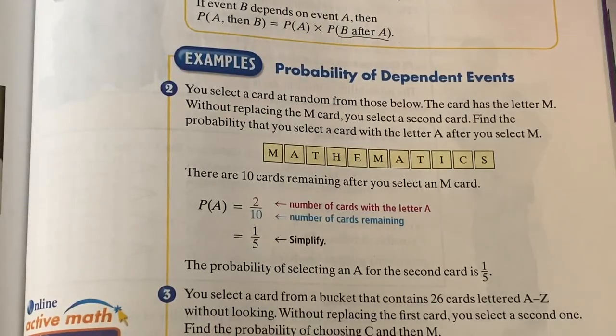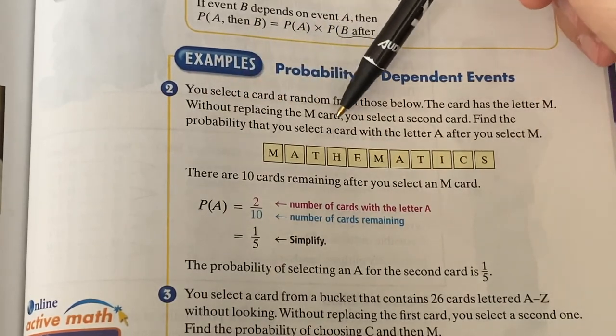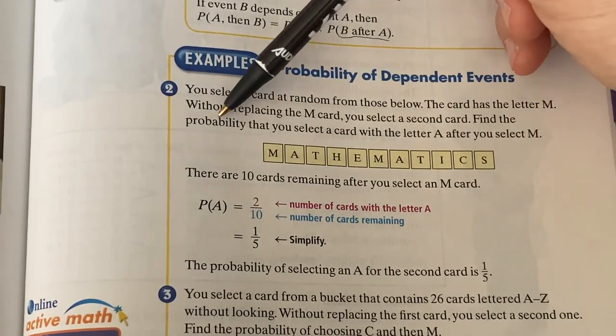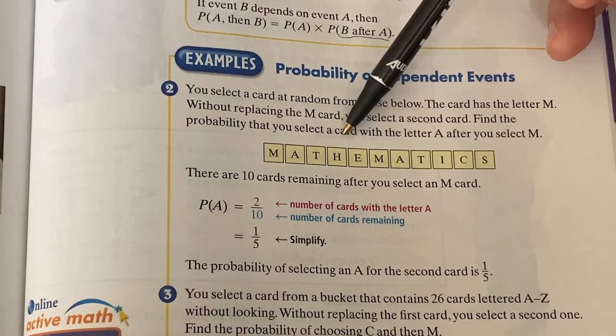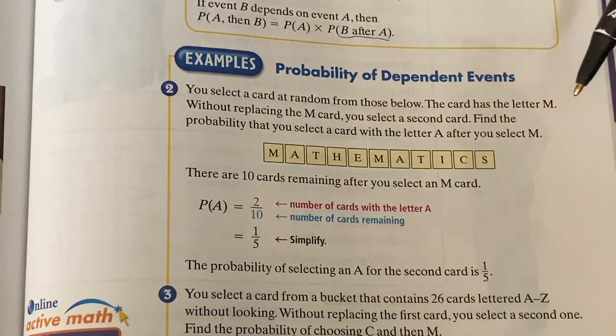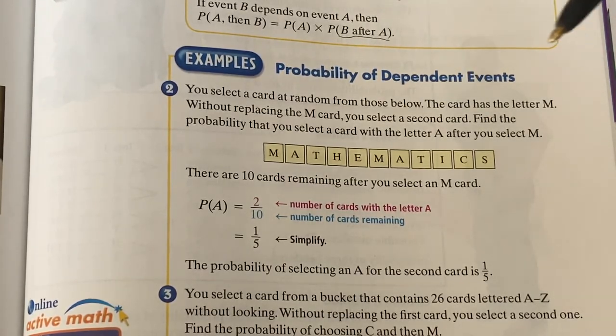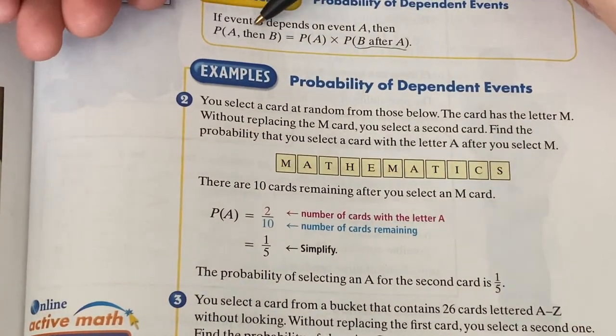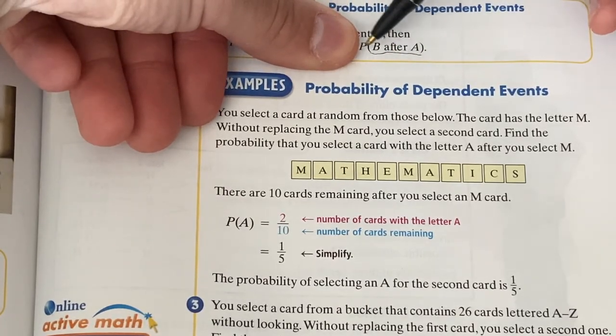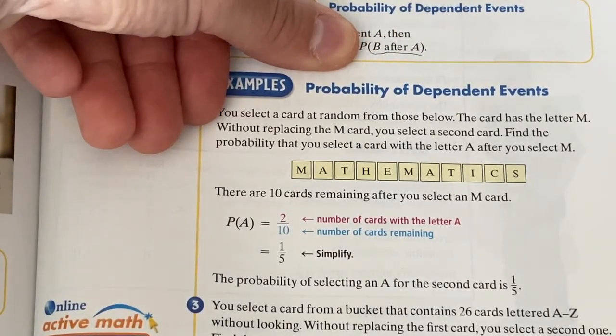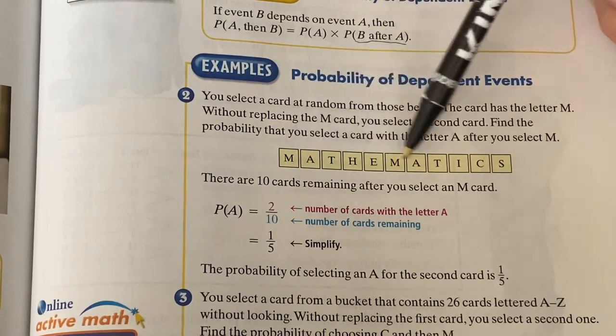If the occurrence of one event affects the probability of the other, then we say that they are dependent events. The way you calculate the probability of two dependent events is exactly the same. You multiply them. But what you have to consider is this piece right here. The second probability is going to be after the first thing has happened, which means typically you're going to change the denominator for sure, and potentially the numerator, not always, but sometimes. So let's take a look at example two here. It says you select a card at random from those below. The card has the letter M. Without replacing the M, you select a second card. Find the probability that you select the card with the letter A after you select the M. All right, so I want to be very clear about this problem. We do not have to multiply anything here. They're telling us what happens first. We don't care about that probability. They're only asking us about the second probability.